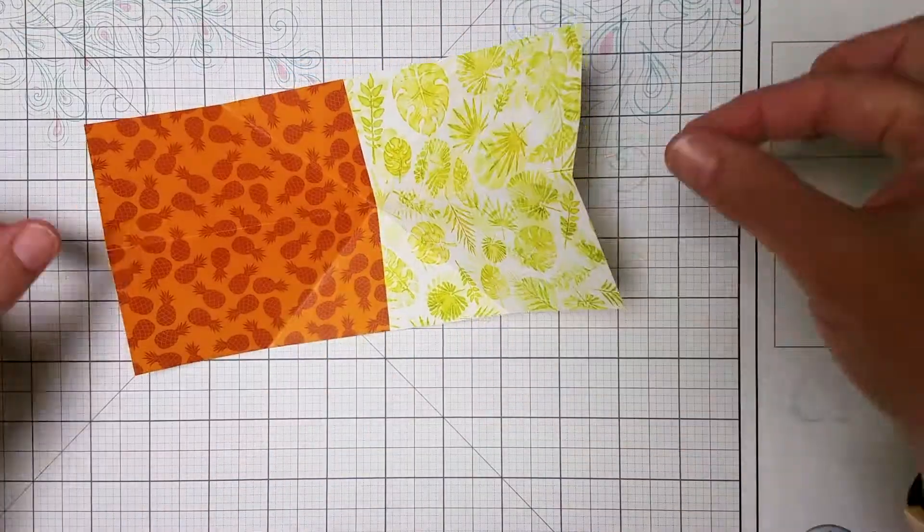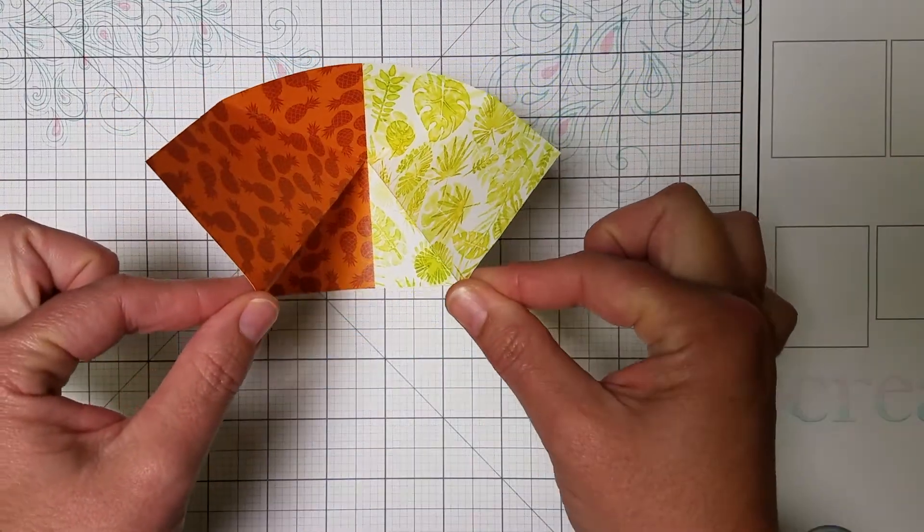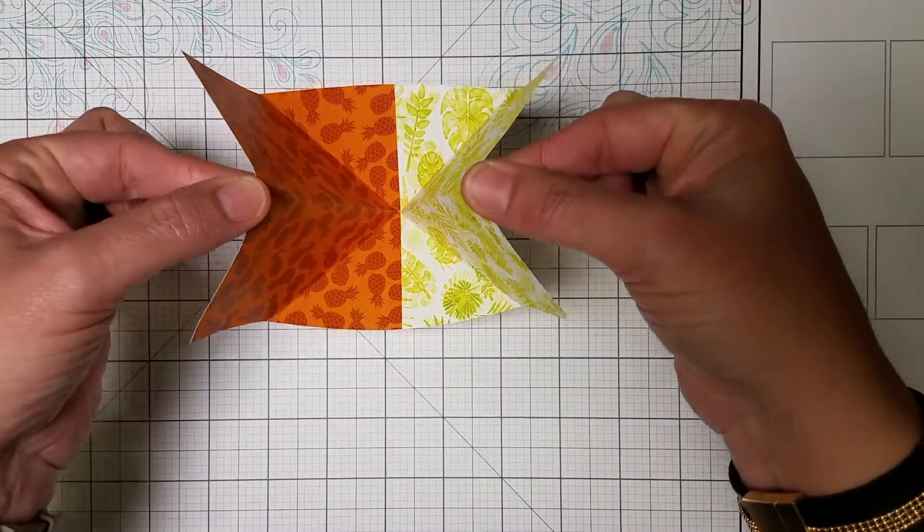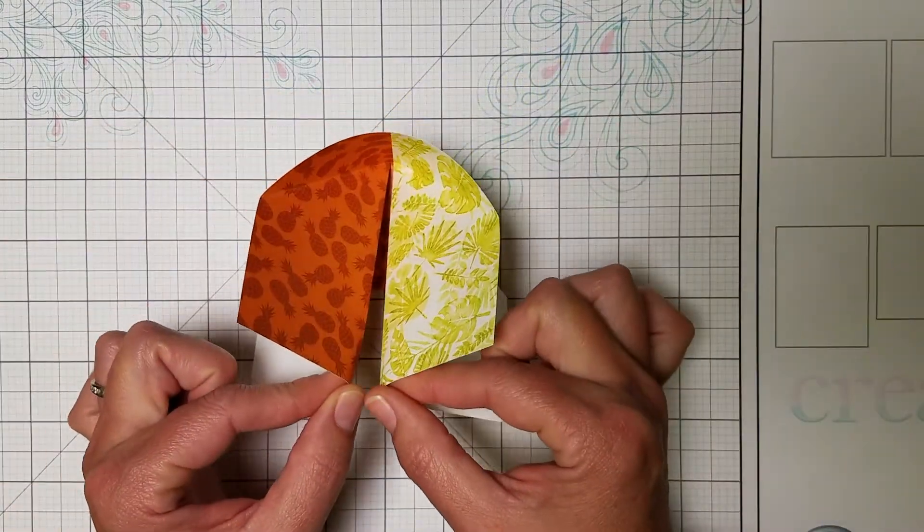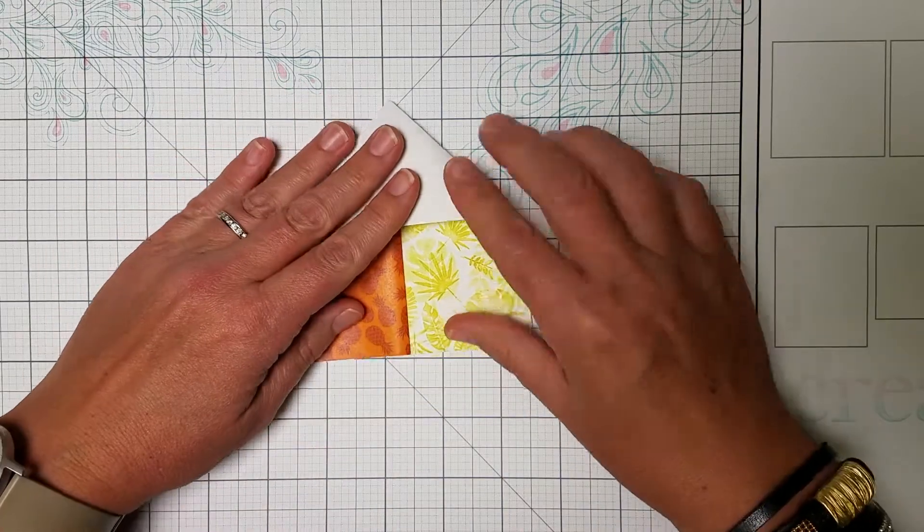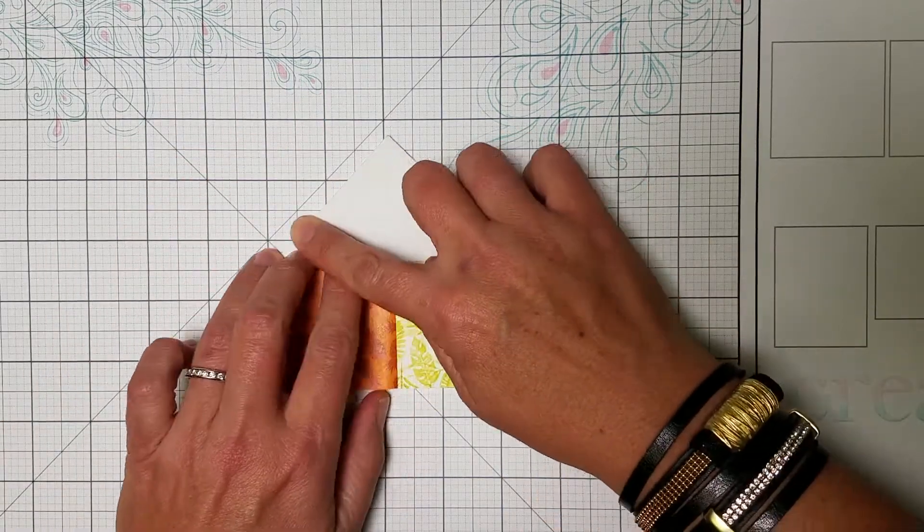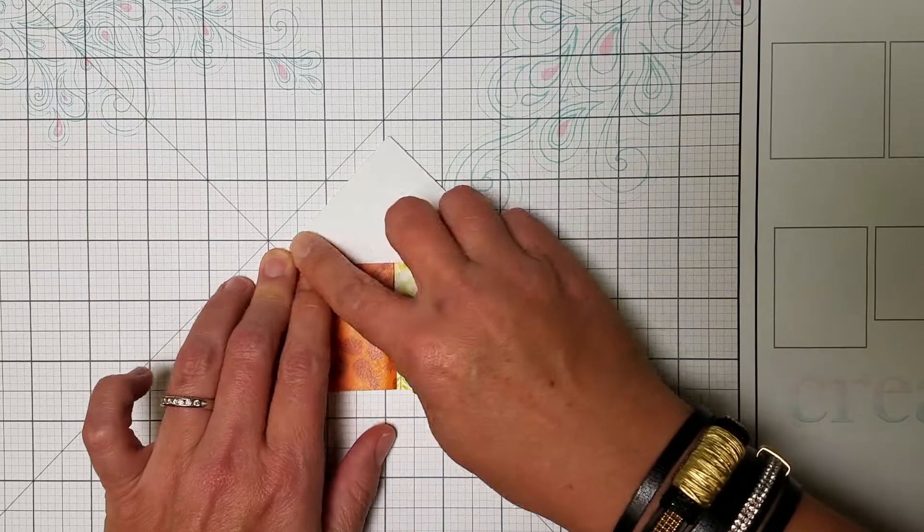So bring those mountains together like that, and if I lay this down it looks like a little house, and I can burnish that and flip it over and burnish.